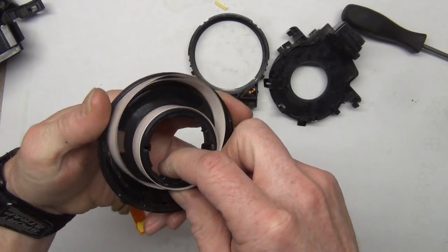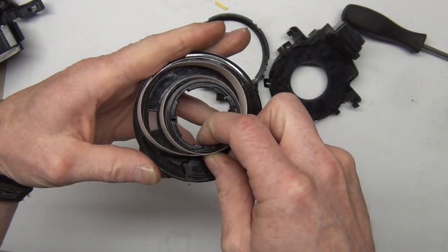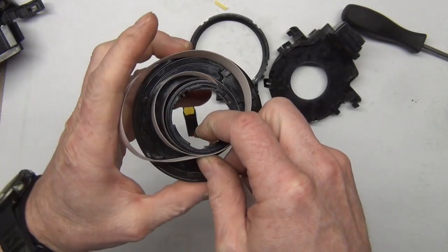When you turn it one direction, it binds down and tightens on that center spool. When you turn it the other direction, it expands against those wheels.